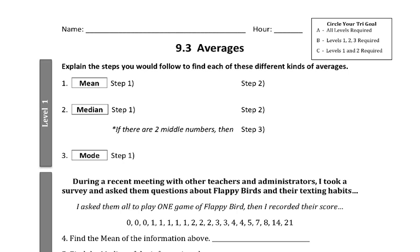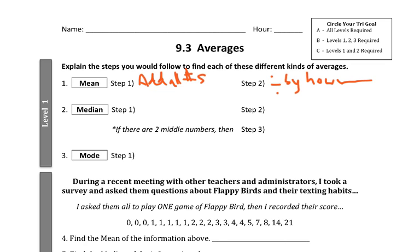You guys are used to that. So let's start with these level one questions. If I ask you to find the mean, the first step is that you would need to add all of the numbers together. And then you would divide the sum — you would divide the numbers that you've added by how many numbers there are. So if you wanted to find the mean, you add all of the numbers together and divide by how many there are altogether.